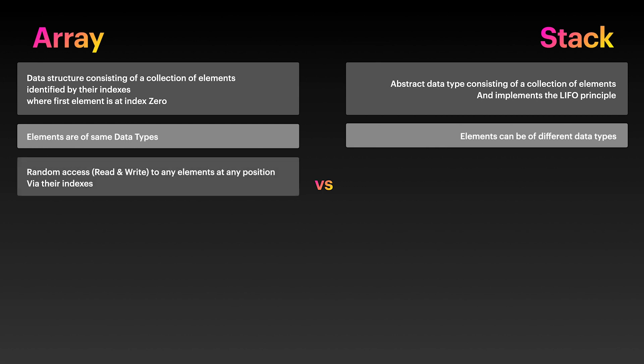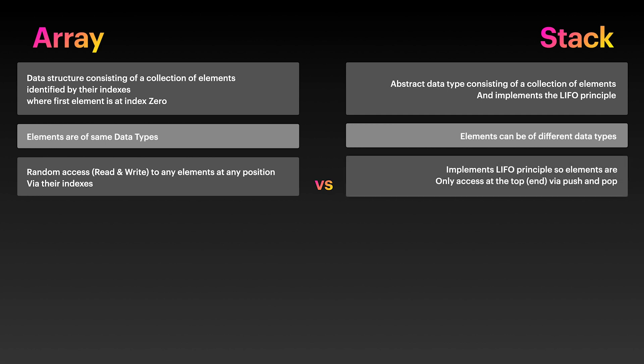Arrays are a random access data type, which means you can access any item at any position — remove, update, iterate, etc. Stacks implement the LIFO principle and you can only read and write from and to the top, aka the end of the list.